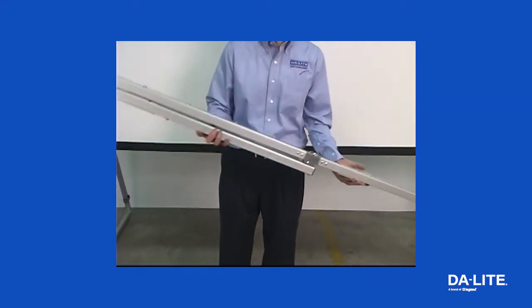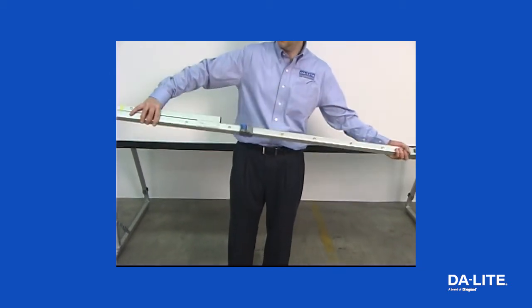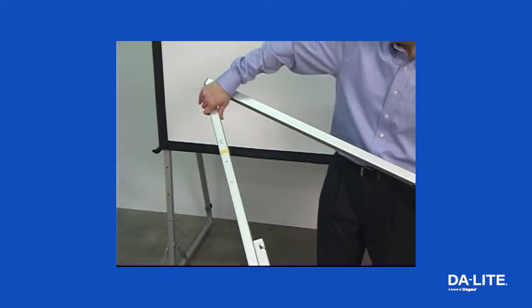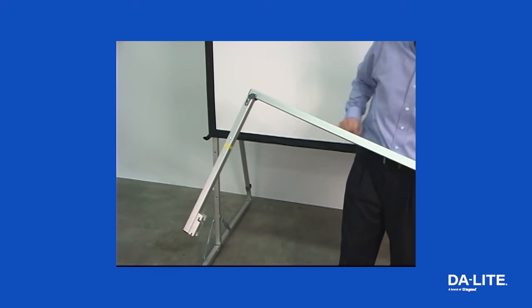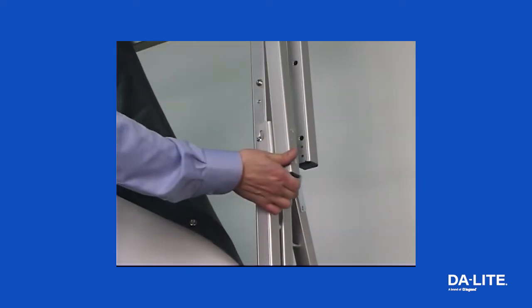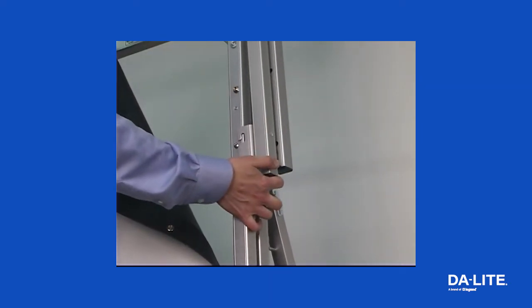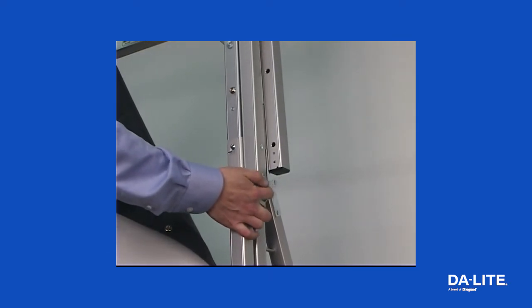To attach the drapery kit to your fast fold screen system, start by unfolding the valance bar and lock all of the latches. Attach the valance bar to the screen frame by sliding the U-shaped dress up hanger onto the shoulder rivets that extend from the screen frame.